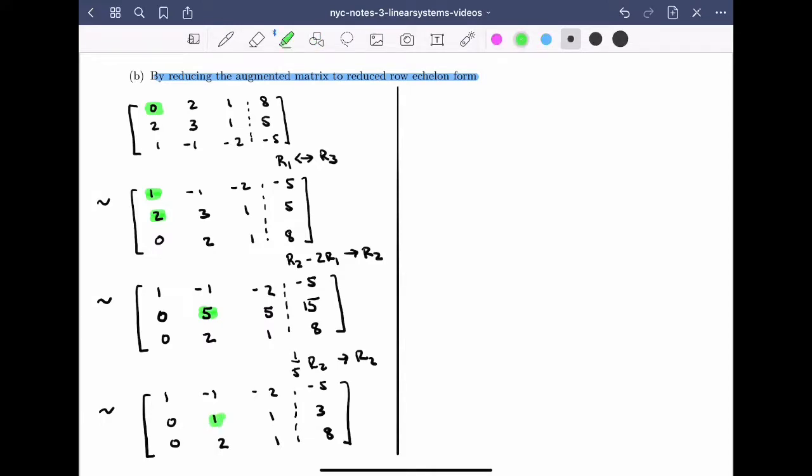Now, I can use this one to get rid of the 2 using the row operation row 3 minus twice row 2 becomes the new row 3. Giving me the matrix 1, minus 1, minus 2, minus 5; 0, 1, 1, 3; and 0, 0, minus 1, and 8 minus 6 is 2.